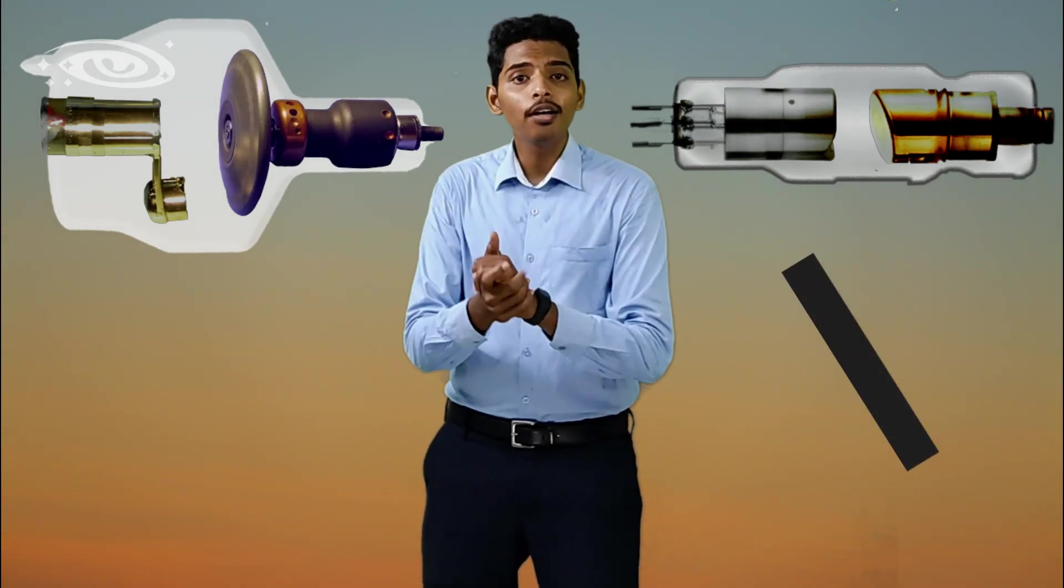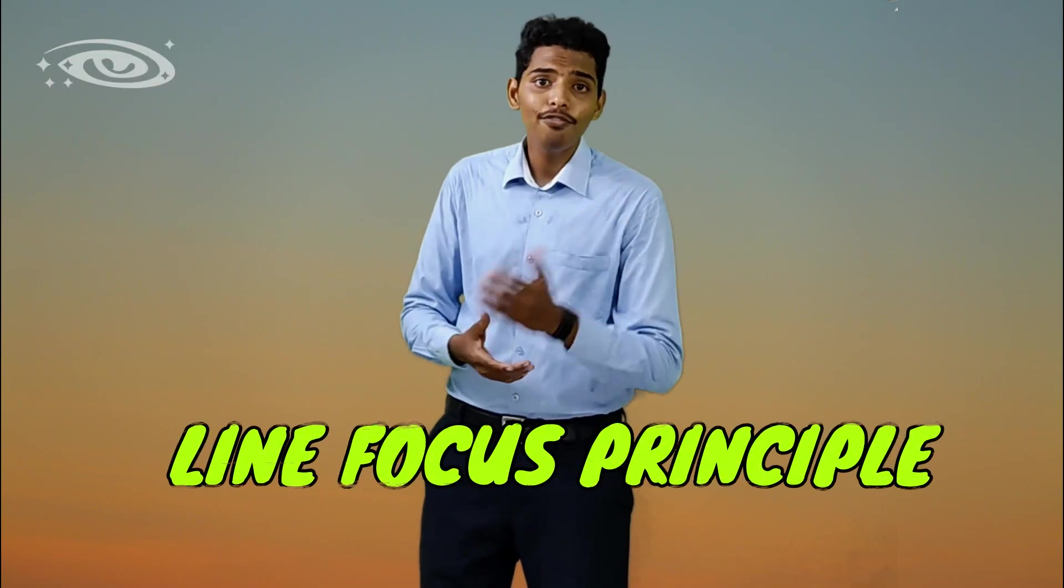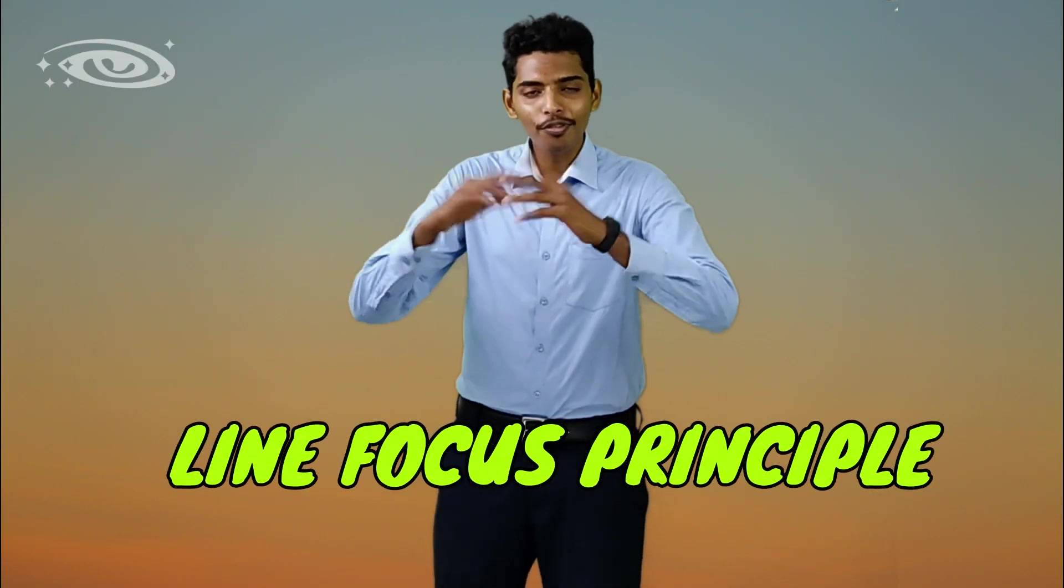In most of the x-ray tubes, you have noticed the anode is somewhat angled, right? So the reason for this anode angle is due to line focus principle. Before going into the line focus principle, let me explain a simple term to understand this concept.